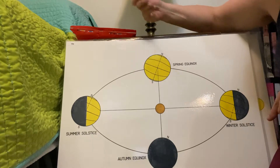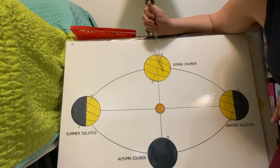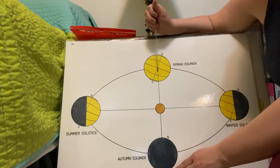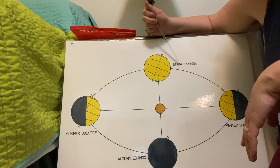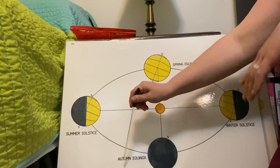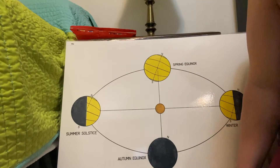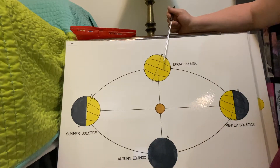We have two places where the days and nights are the same length — we have it in the spring and the fall. We have a special name for these. We call them the spring equinox and the fall or autumn equinox. Do you hear that word 'equi'? It sounds like 'equal' — that's because we have equal length of day and night right here.